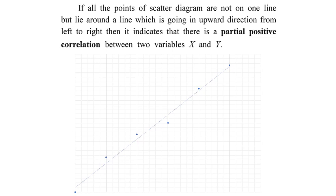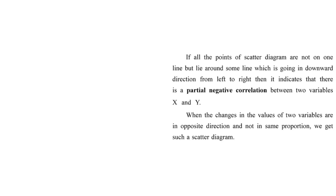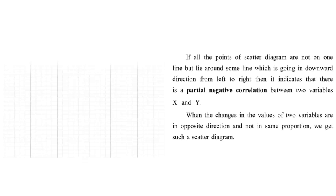The fourth type is partial negative correlation: the points are not on a single line but are scattered going from left top to right bottom, as seen on the graph. The imaginary line through these scattered points trends negatively, making it partial negative correlation.